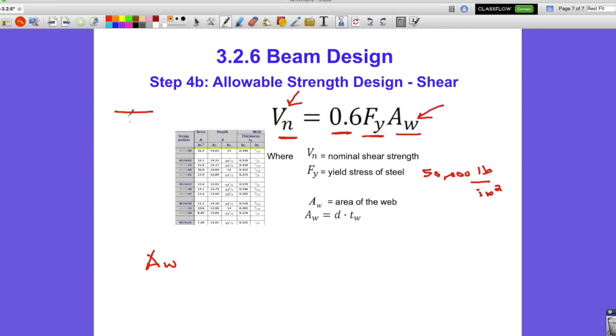Hopefully you'll remember the part of the beam that's the web. If you have a wide flange or some people call them I-beam section like this, the flange is the horizontal part at the top and the bottom, and then the web is this part in the middle.